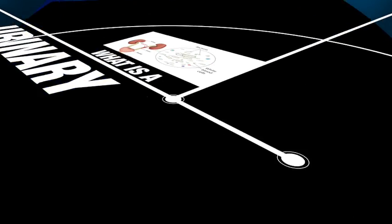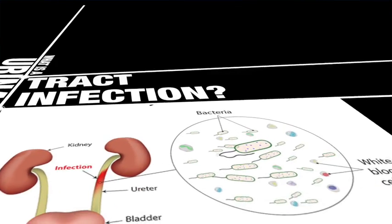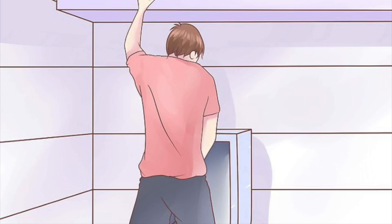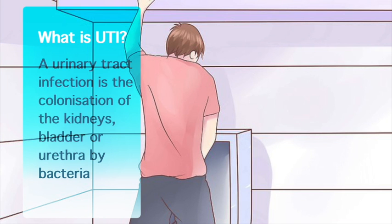To begin, we will introduce what a urinary tract infection is. A urinary tract infection, or UTI, is an infection that affects any section of the urinary system. This includes the urethra, ureters, bladder, and kidneys. Most infections involve the lower urinary tract, although if left untreated, UTIs may spread to the bladder and kidneys causing bacterial cystitis and pyelonephritis.